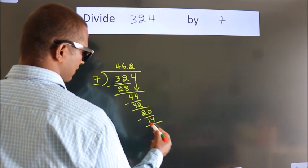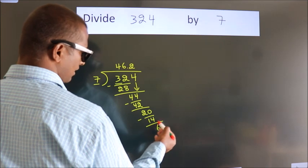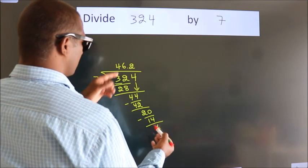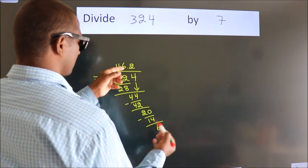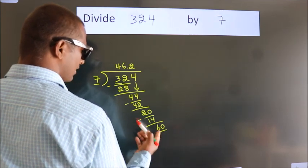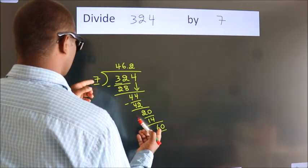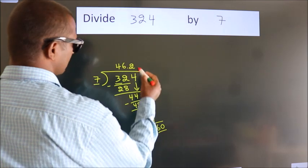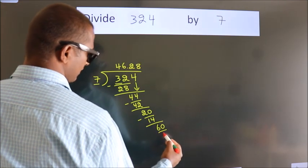Now, we subtract. We get 6. After this, we already have the decimal, so directly take 0. So 60. A number close to 60 in the 7 table is 7 eights, 56.